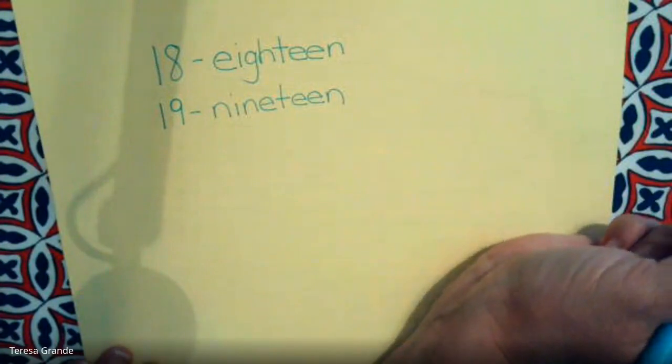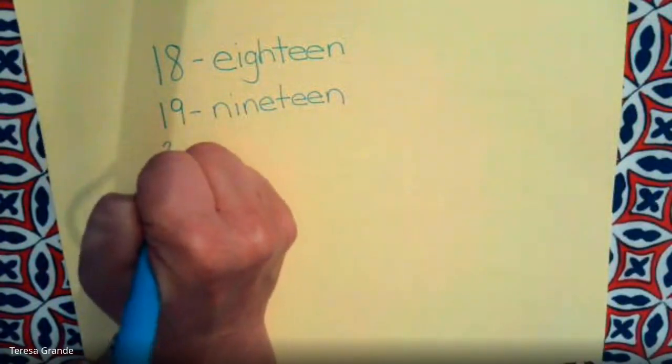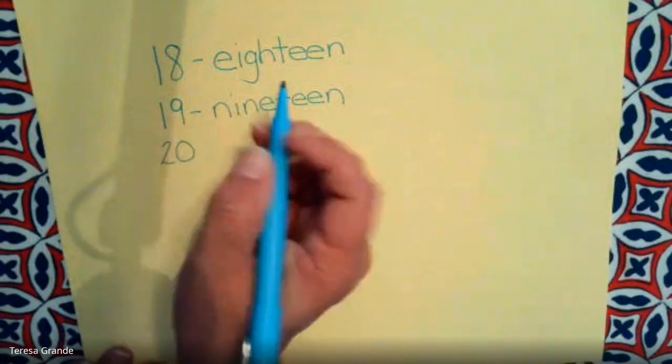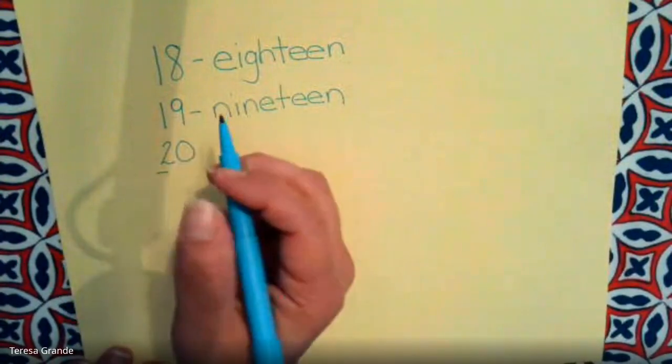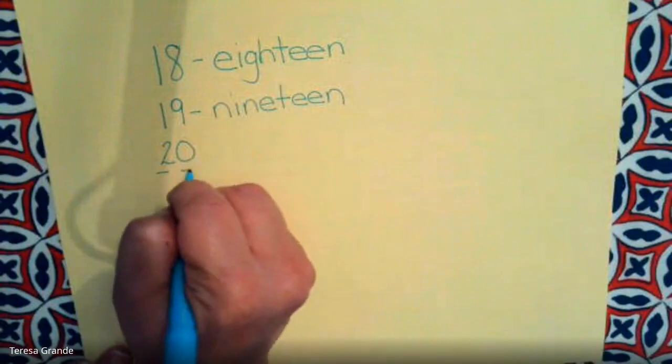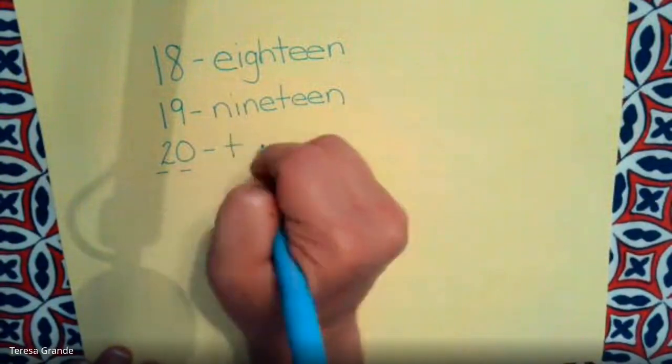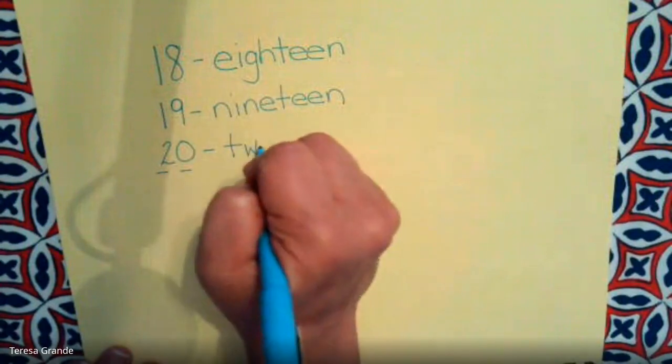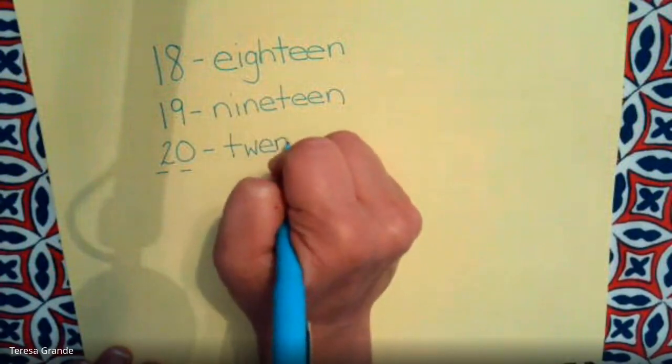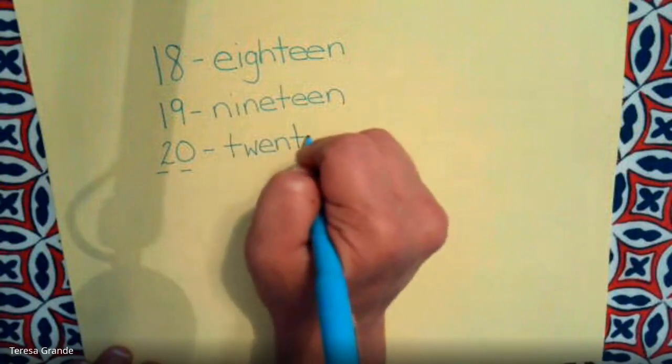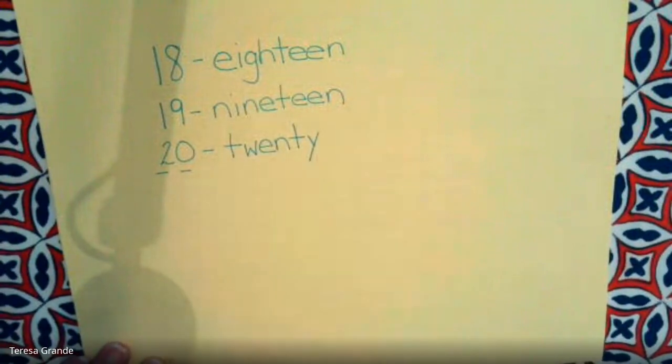Now, let's write the number 20. The number 20 has a 2 in the 10's place and a 0 in the 1's place. And the number 20 is written t-w-e-n-t-y, 20.